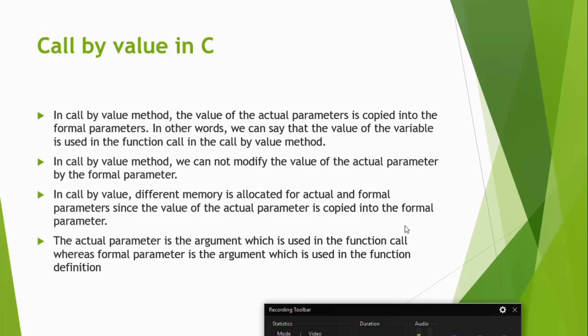In the function call, you have two types: call by value and call by reference. In call by value, the function call has a set of parameters, and those parameters are just copied to the function definition part. Only the value gets copied, and whatever change is done in the function will not be reflected back in the main function.